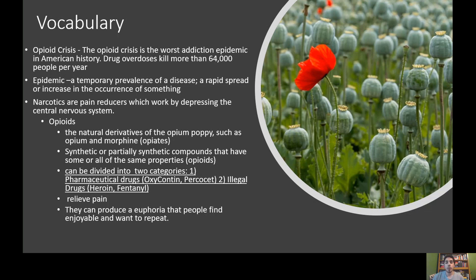There's a distinction between opiates and opioids, but for our purposes we're not concerned with that. We're going to divide opioids into two categories: pharmaceutical drugs like Oxycontin and Percocet that are predictably abused by large numbers of people, and illegal drugs like heroin and fentanyl. When I use the term opioids, I'm talking about all of them.